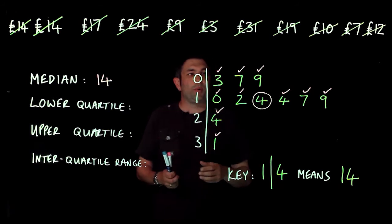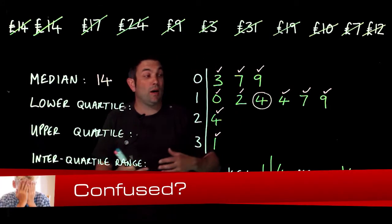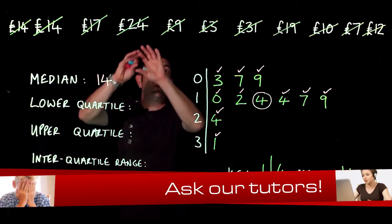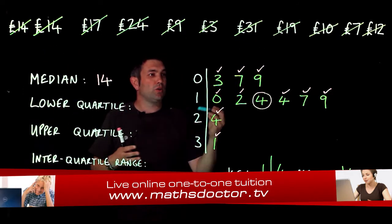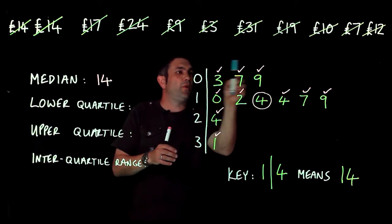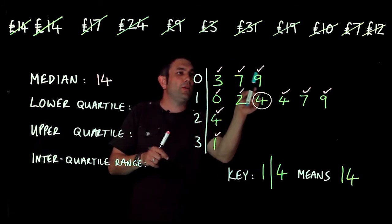Now for the lower and upper quartiles, you may have seen another video where we showed how to do this. Once we've got our median, we're looking at finding the middle value of these five numbers here.